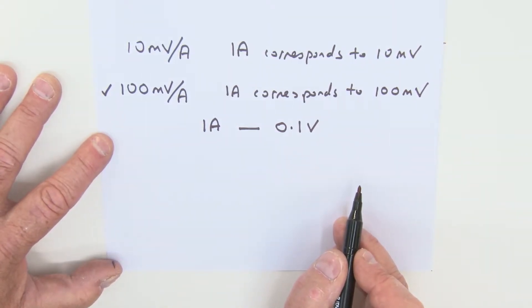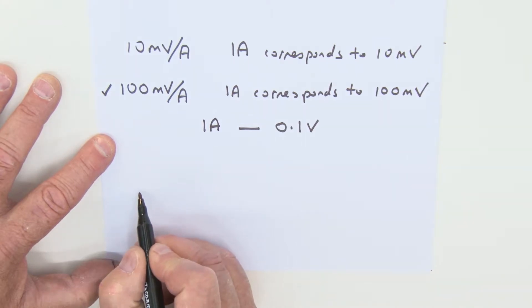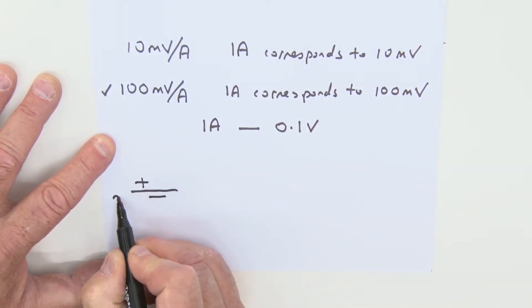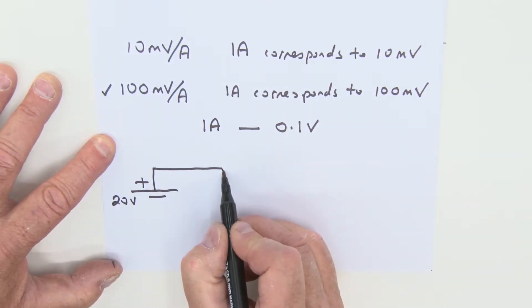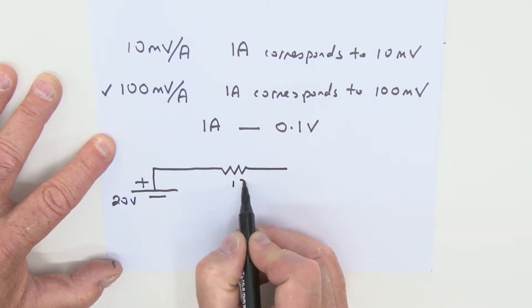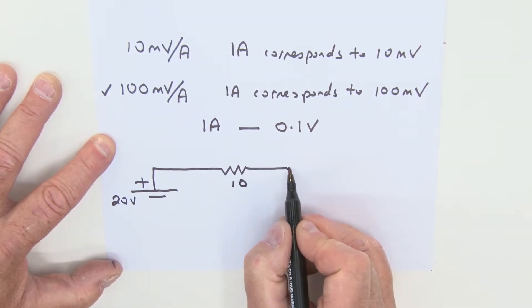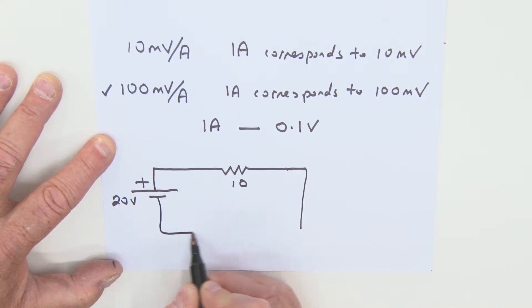The actual circuit that we're going to look at is very simple. It consists of a power supply, and we're going to set that to 20 volts. We're going to feed that into a resistor, and this is going to be a 10 ohm resistor. And that is essentially our circuit.